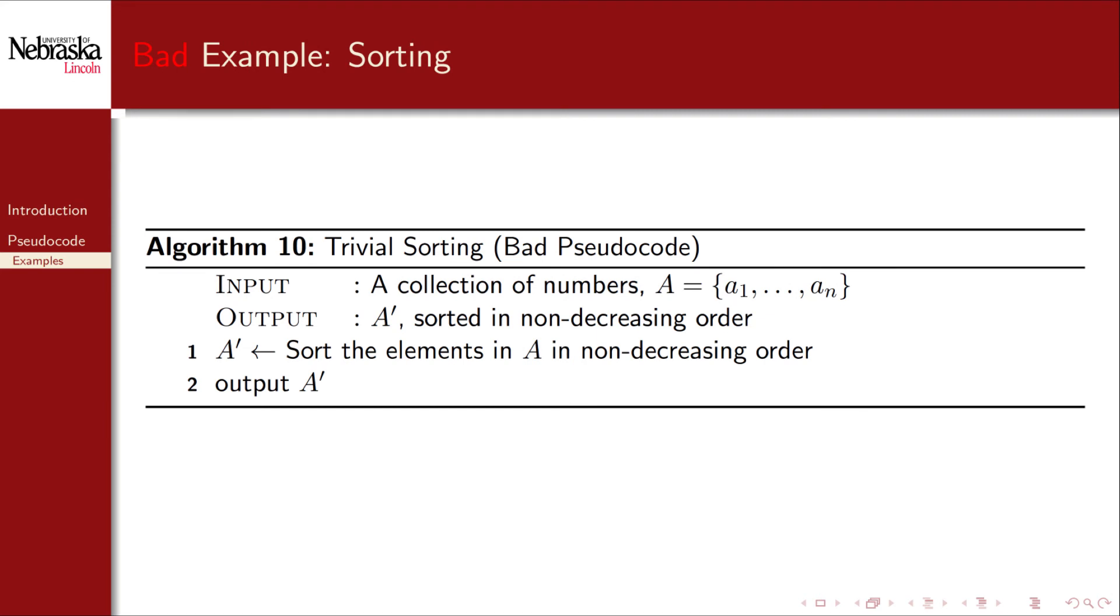A bad example is also helpful. Here we've tried to write pseudocode to sort a collection of numbers, but we've made it too trivial. In general we should use plain English when possible, but we've trivialized the purpose of pseudocode by not describing the essential details here. How should we sort the elements? We should note, however, that this line would be perfectly fine if we were using sorting as a sub-step in another algorithm.